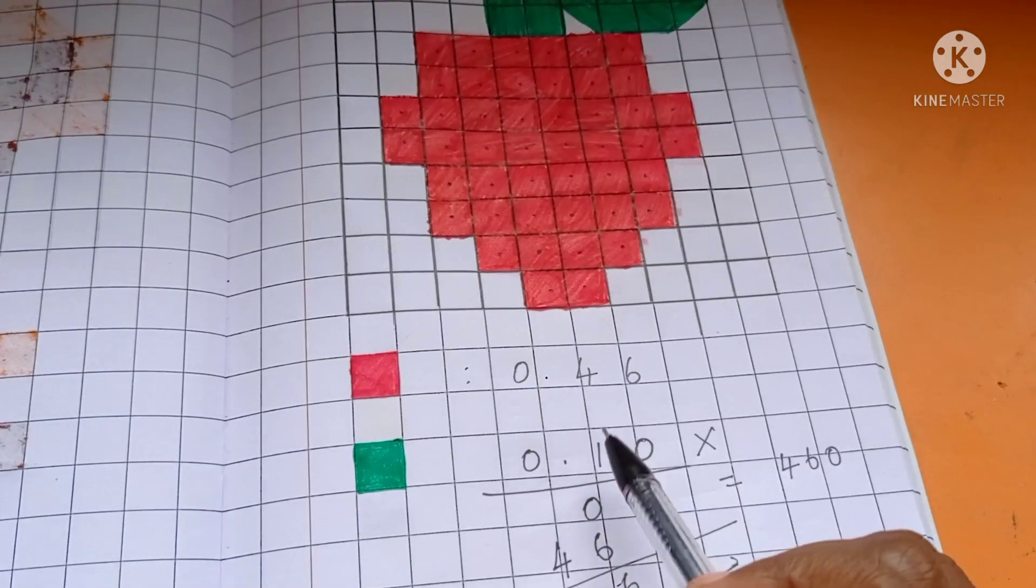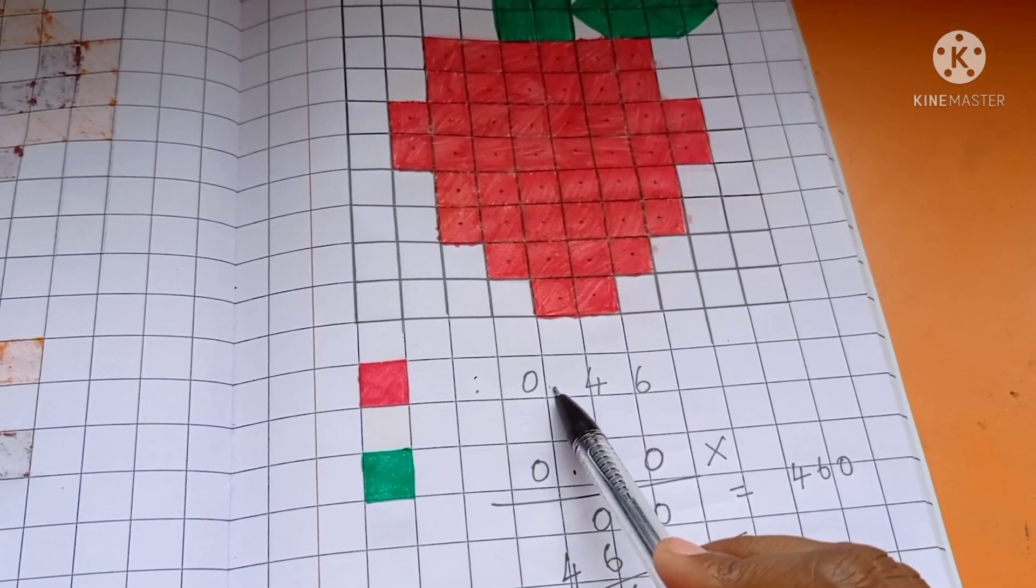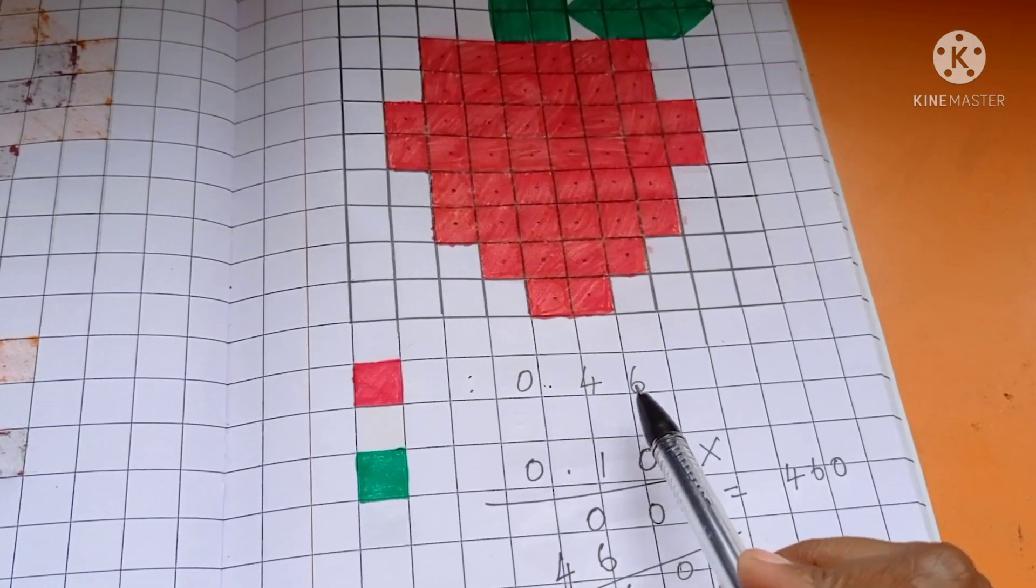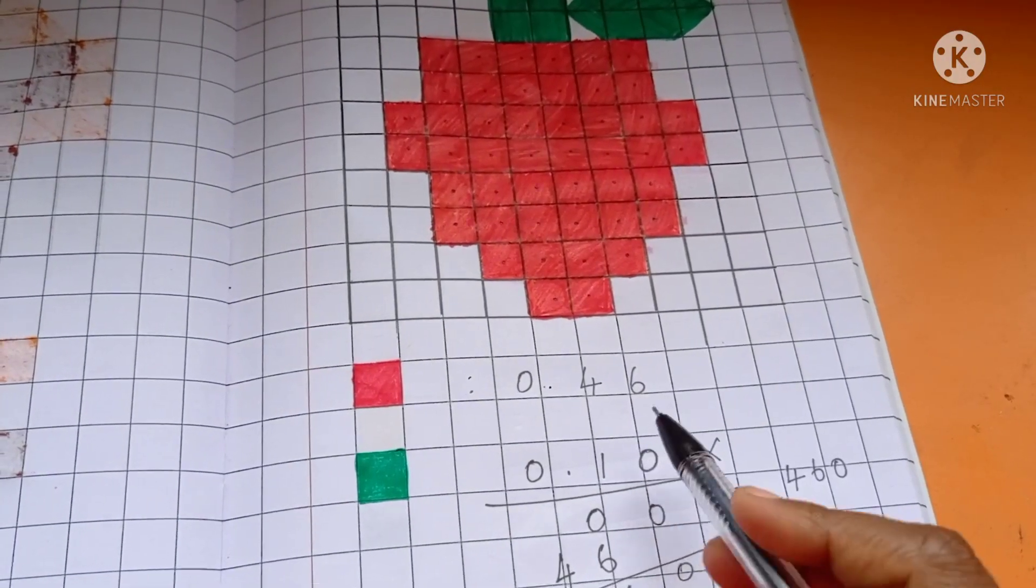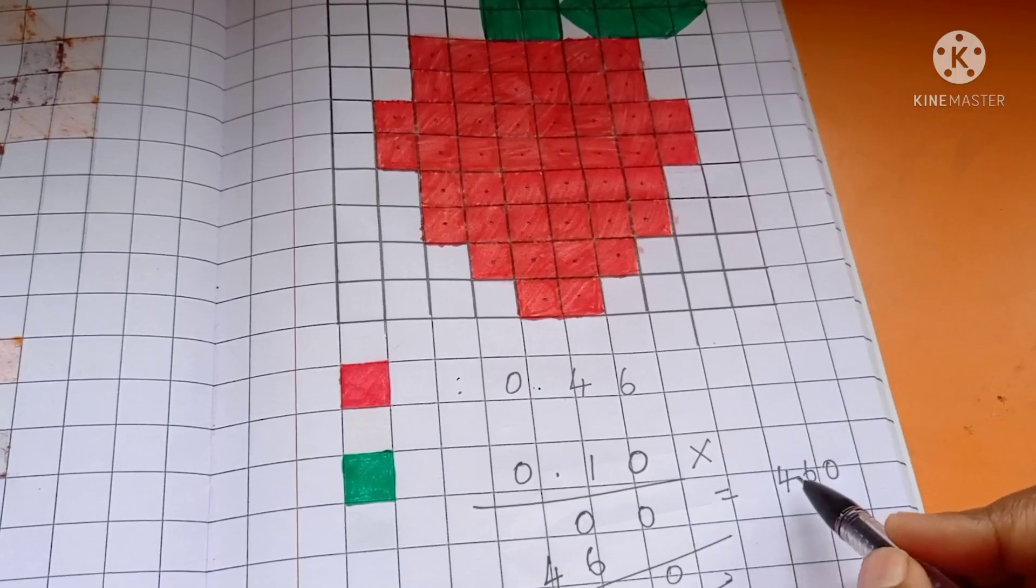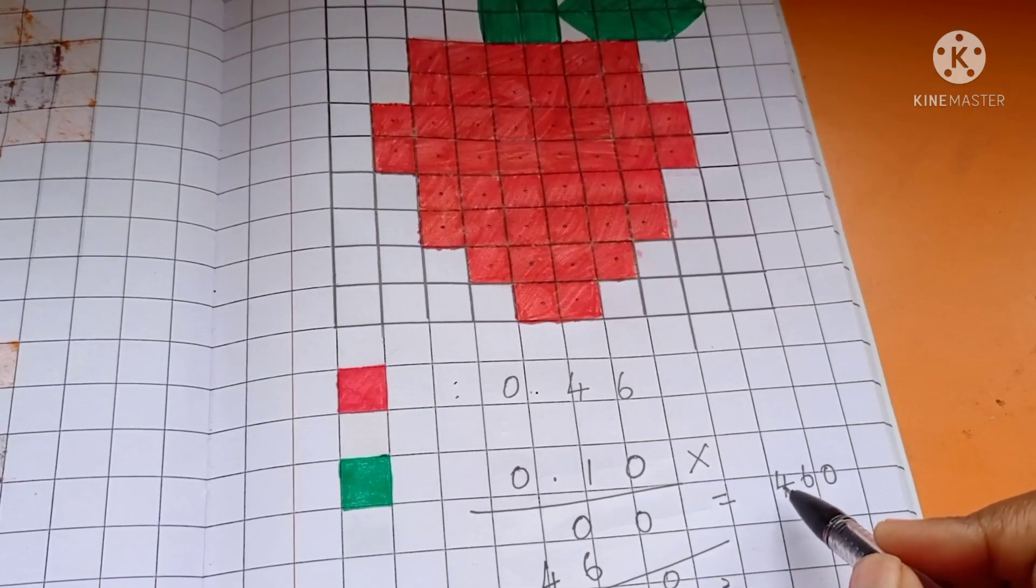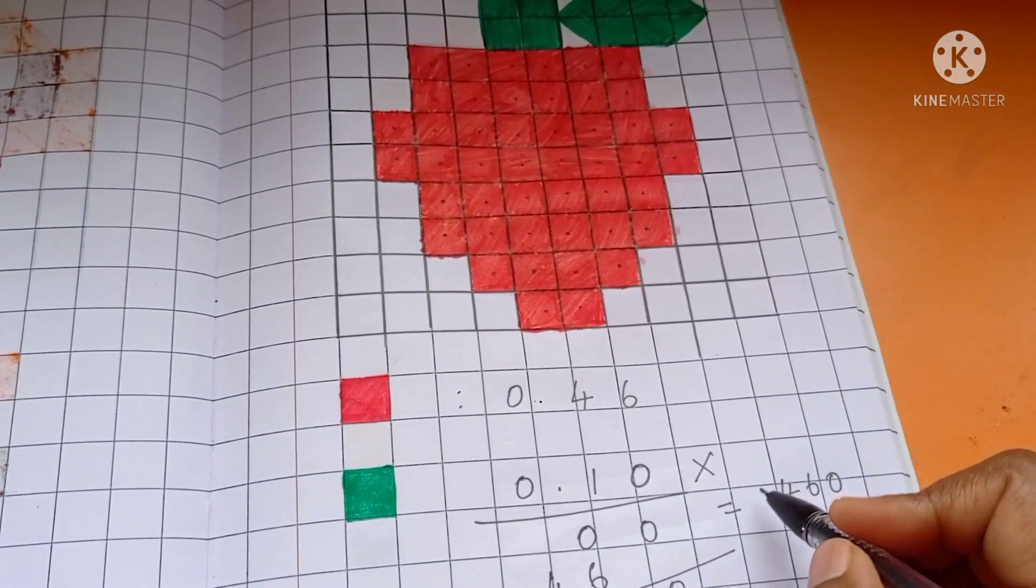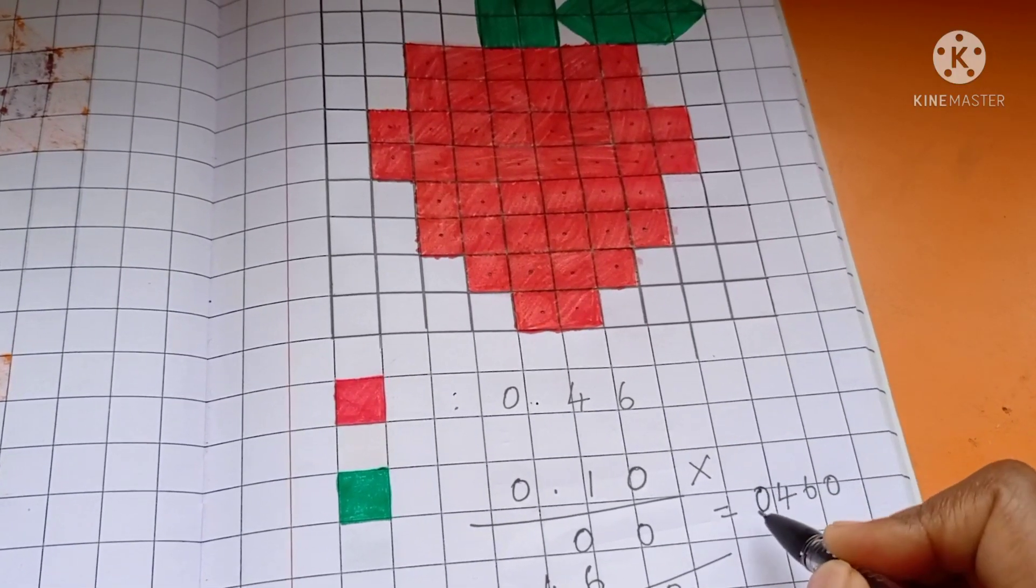So this two decimal point also you have to calculate decimal after 1, 2, 3, 4. So in the answer, four numbers after you have to keep decimal. So already 1, 2, 3, there are three numbers.